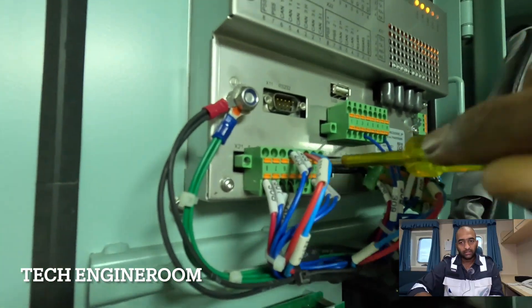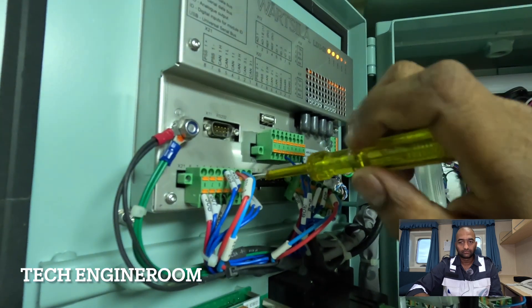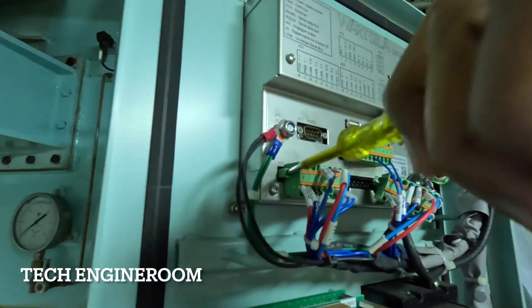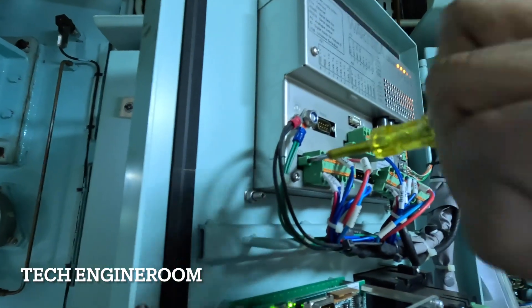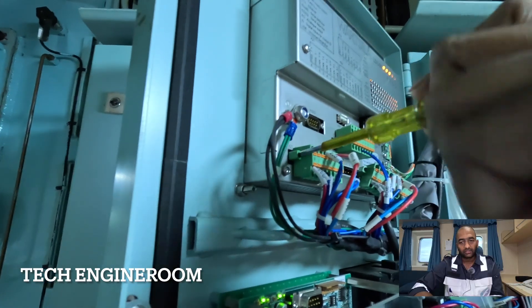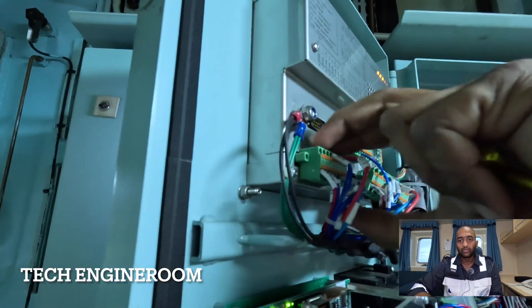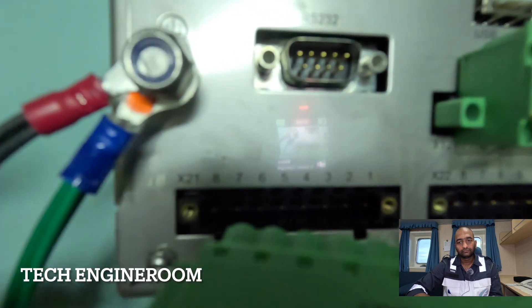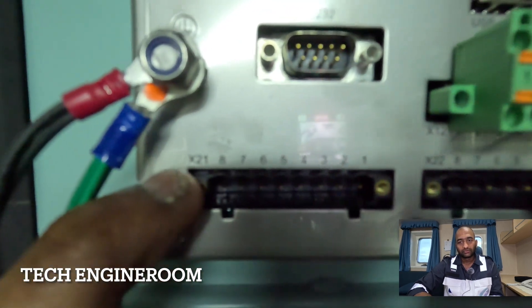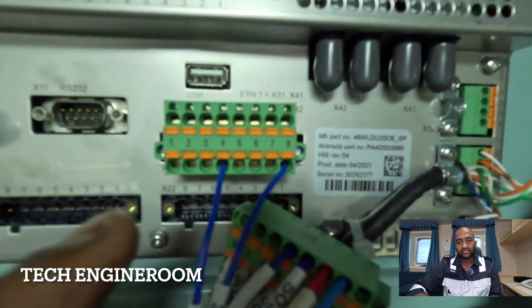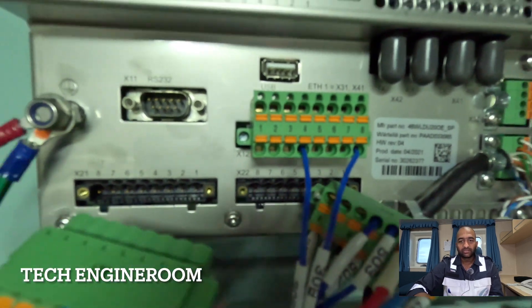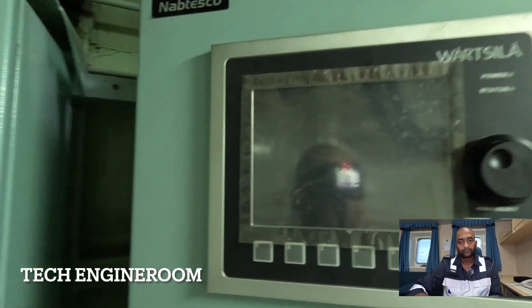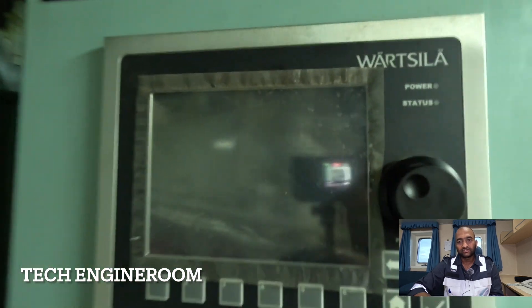Then remove x21. This should be done in order, so don't do it in reverse mode. Once we remove both x22 and x21, the LDU is powered off. You can see this LDU is totally powered off.